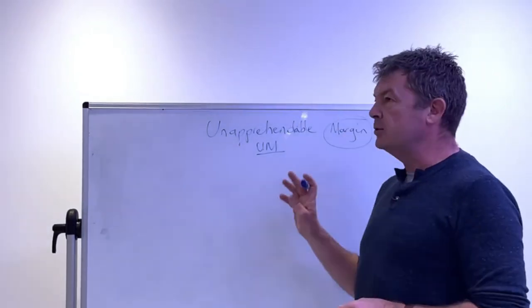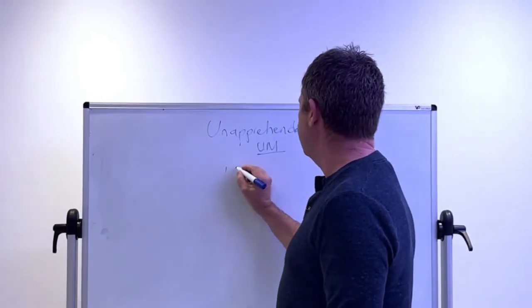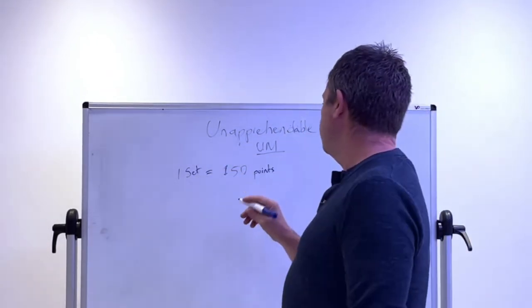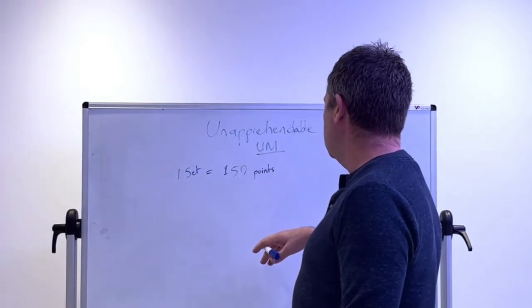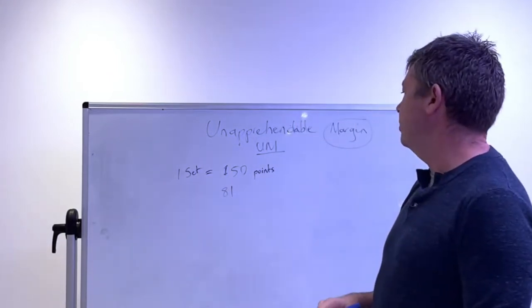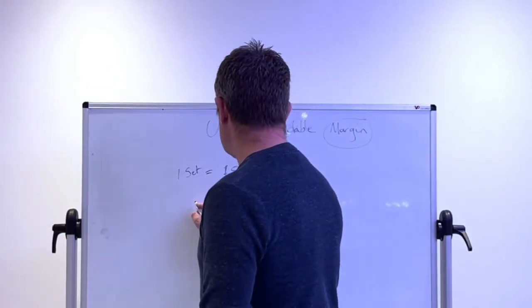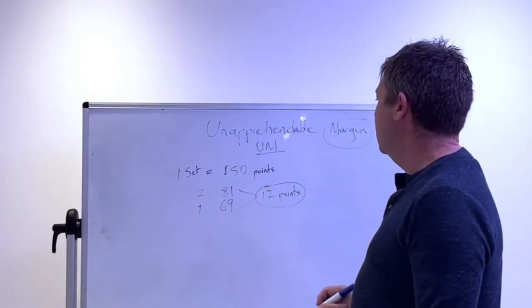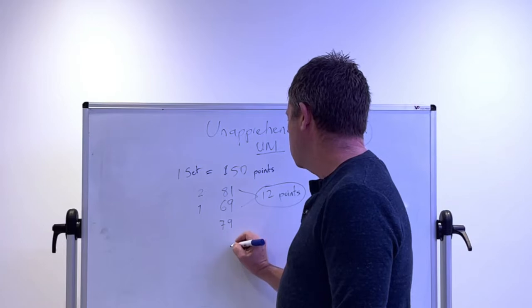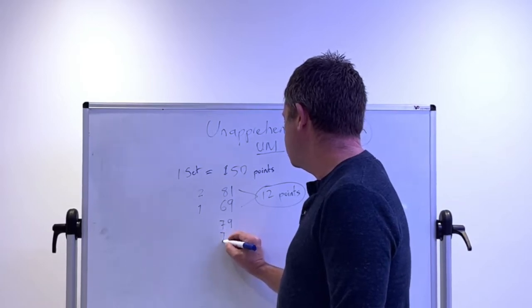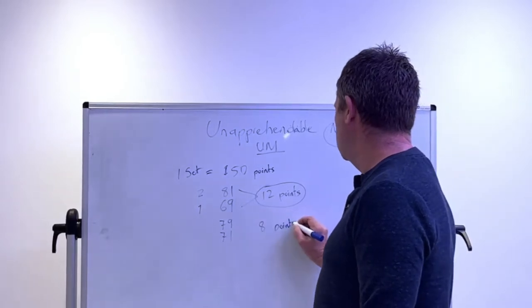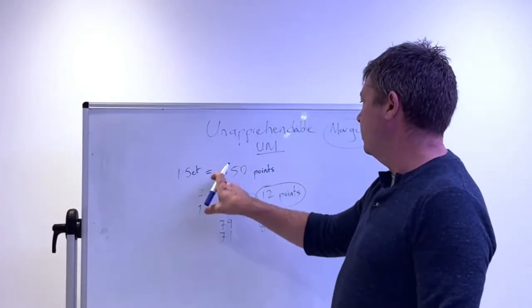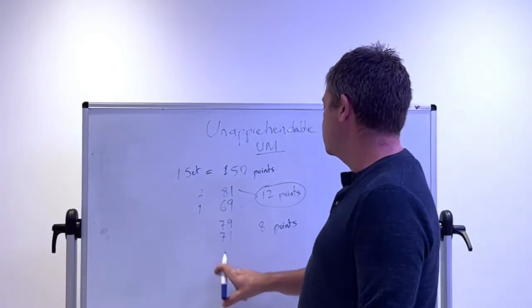What's the margin part? What I'm talking about is, let's say in a typical set there's 150 points, so one set equals 150 points. One player will normally get 81, player two 69. We can see the difference here.